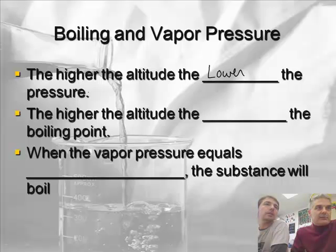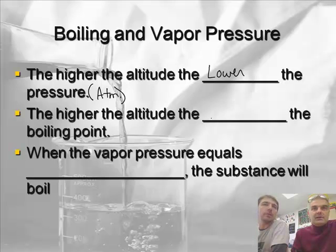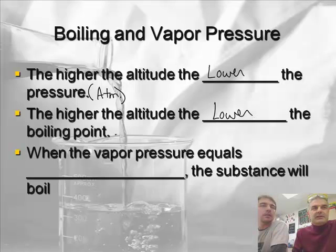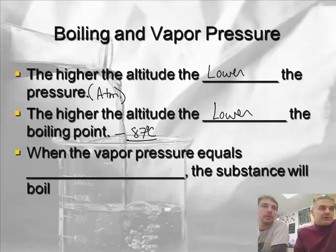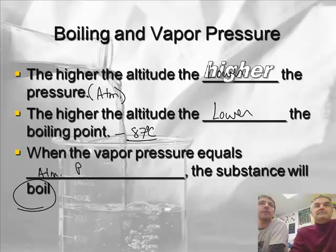The pressure — when I say pressure here, I'm talking about atmospheric pressure. The higher the altitude, the lower the boiling point, the lower the atmospheric pressure. It boils at something like 87 degrees at the top of that mountain, where normally it's 100 degrees. We're going to say it's about 92 or 93-ish. So when the vapor pressure equals the atmospheric pressure, the substance boils.